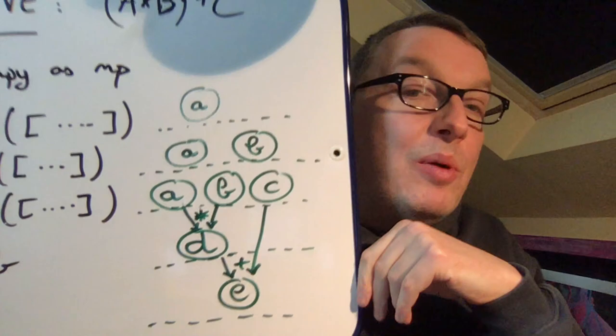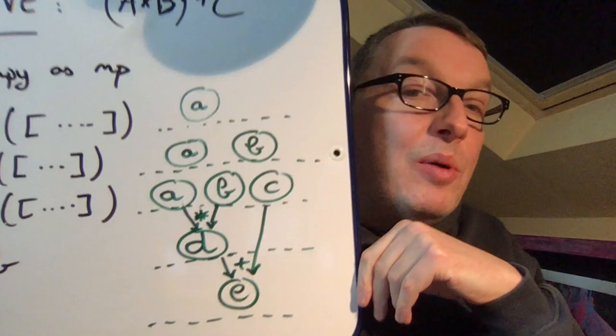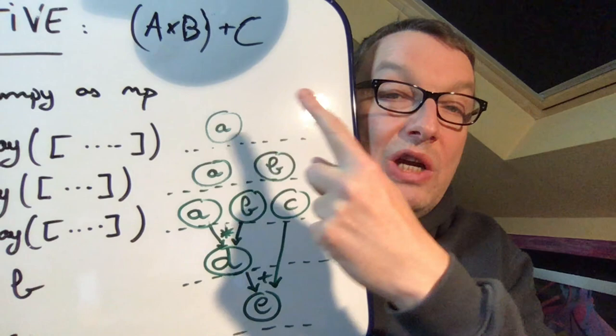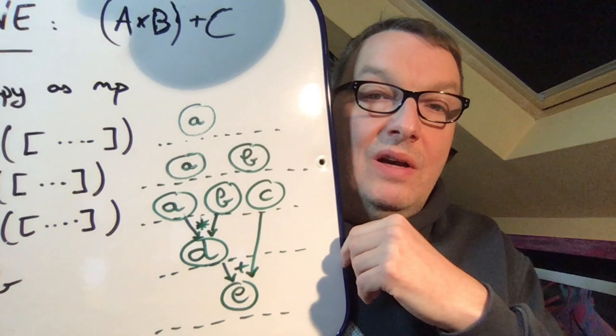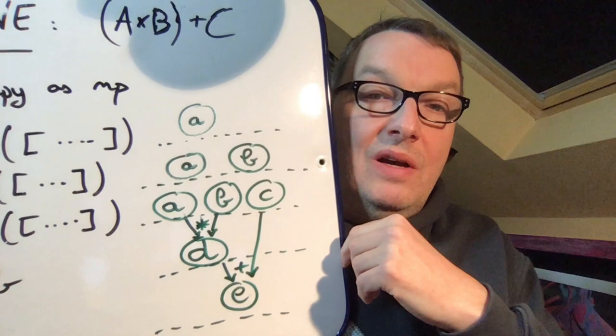So every time we run a line, we create a new NumPy object, and all of them exist. They all exist in memory, so A, B, C, D, E are all inspectable, and this makes the code easier to understand, easier to debug.